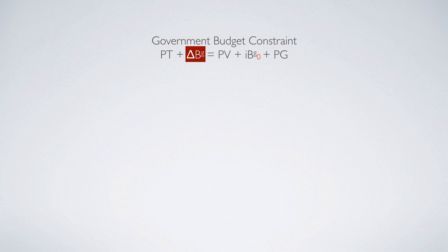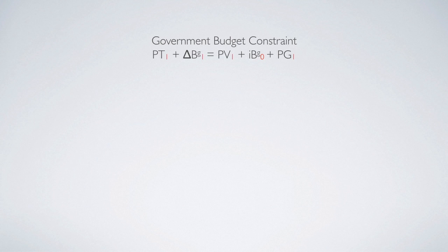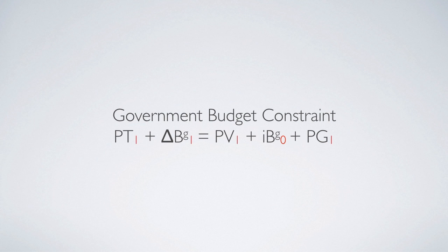For the delta B^G part, it is the new debt issuance today — today's decision — so we put subscript 1. This gives us the government debt accumulation equation: the end-of-today's government debt B^G_1 equals yesterday's balance B^G_0 plus the new issuance of debt today, delta B^G_1. For the remaining components T, V, and G, they are all today's decisions, so we put subscript 1. This gives us the final government budget constraint with time subscripts.